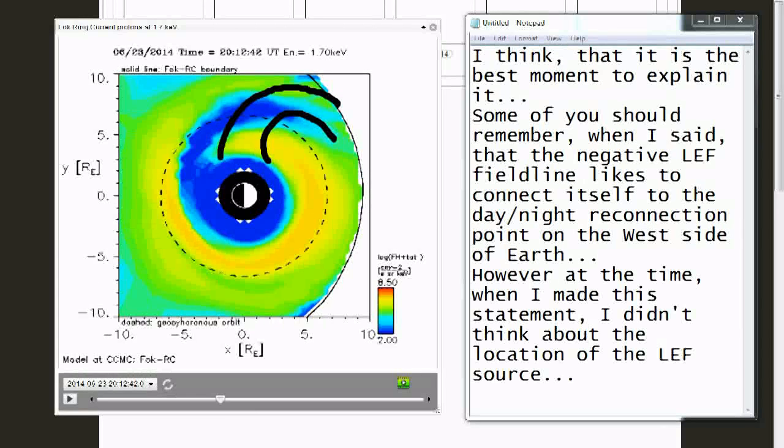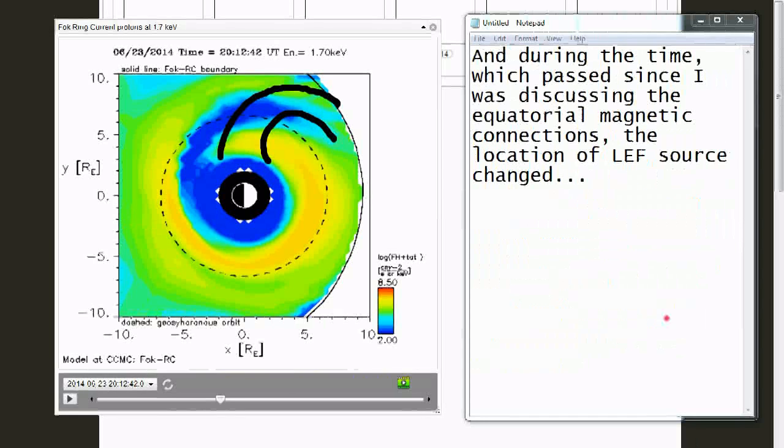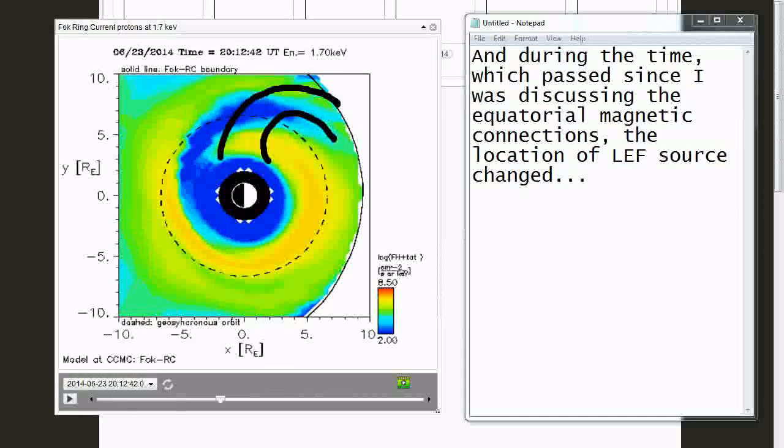However, at the time when I made this statement, I didn't think about the location of the low energy field source. And during the time which passed since I was discussing the equatorial magnetic connections, the location of the low energy field source changed.